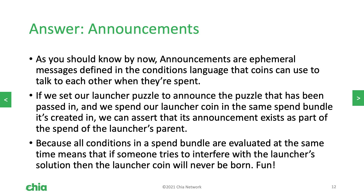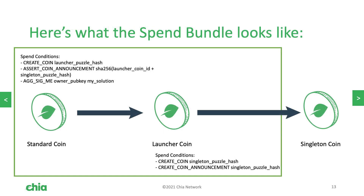To do this we can use announcements. Announcements are used to create messages between coins during spends. If we set our launcher puzzle to announce the puzzle being passed in, when we create our launcher coin we can assert that that announcement exists — and because all conditions are evaluated at the same time, this is valid. The spend bundle spends two coins: the parent standard coin asserts an announcement from the launcher coin, and the launcher coin is spent to create our singleton while also creating the announcement. So they both have to be there, and if the announced puzzle is wrong then the launcher coin is never even created.